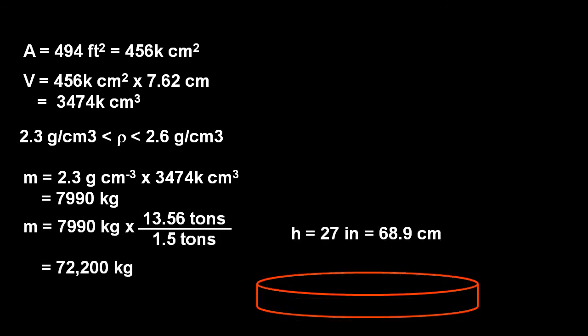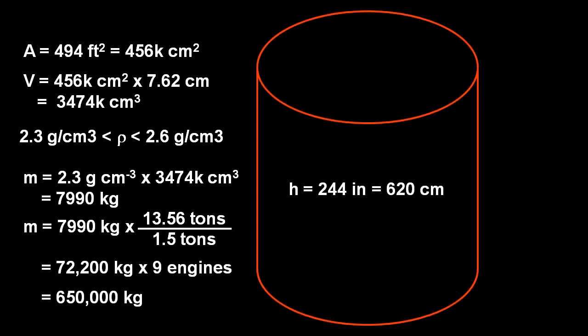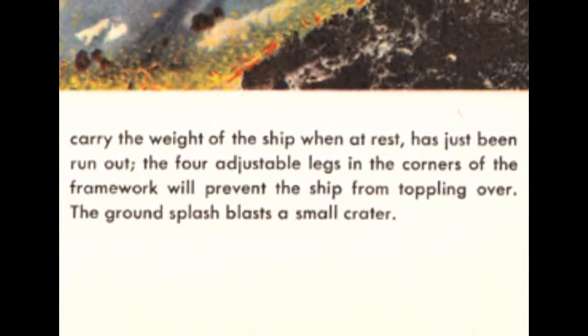If 9 engines were used to land, that's 650 metric tons, or 81 times more than the lunar module. I can see why Von Braun thought his ground splash might blast a small crater.